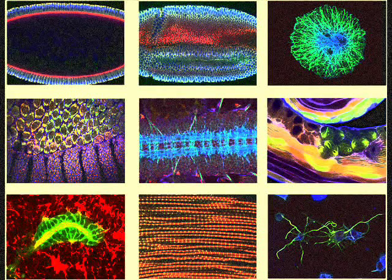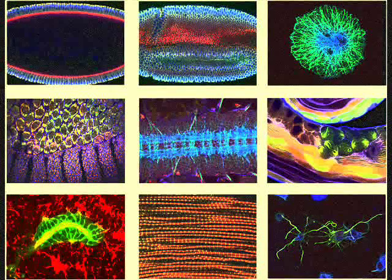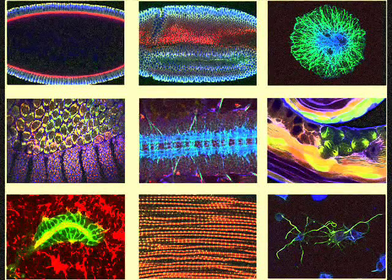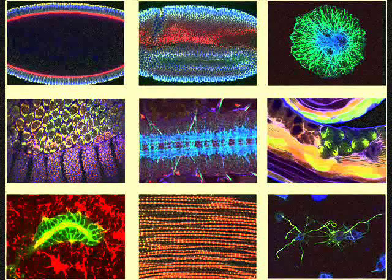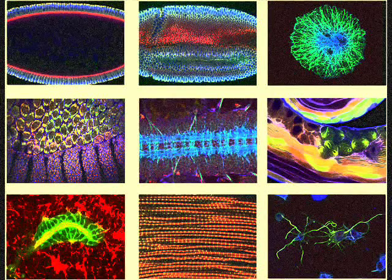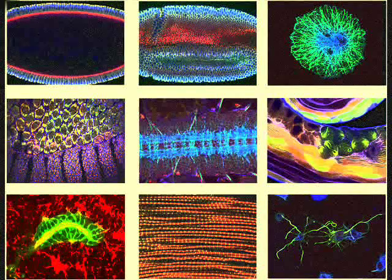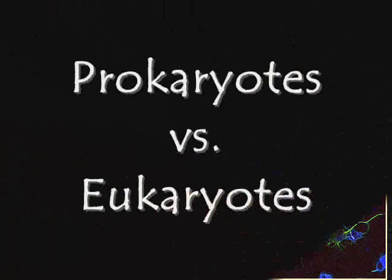Cells come in a variety of shapes depending on their function. The neurons from your toes to your head are long and thin. Blood cells are flat discs so they can flow smoothly.